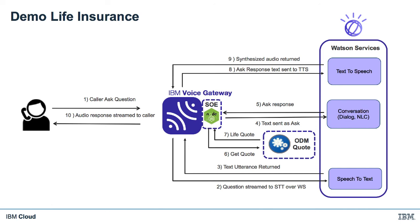Before I can give you a quote, I need to know a few things about you. Let's begin with your age. — I'm 41. — How much cover do you need? — £250,000. — Are you male or female? — I'm male. — Your quote is £233.25. Thank you for calling Watson Insurance.